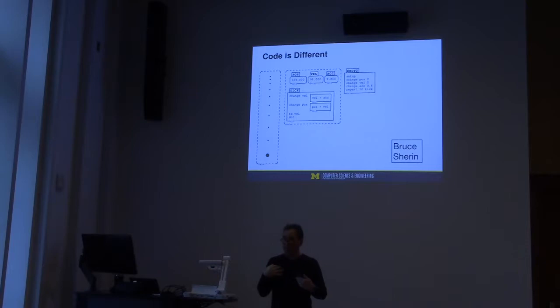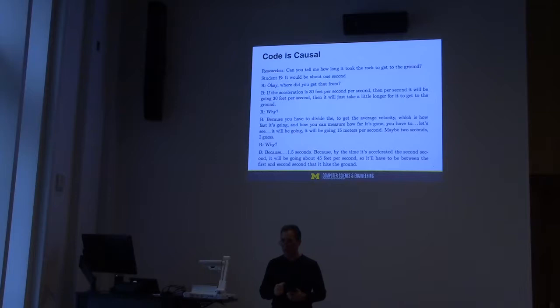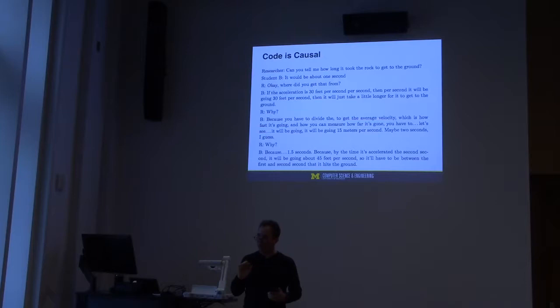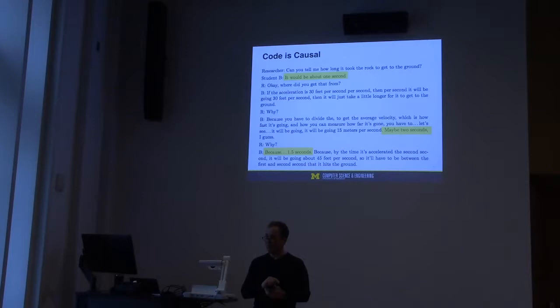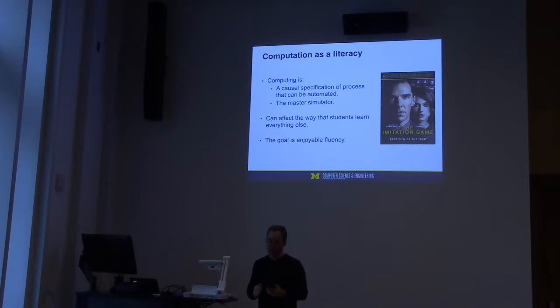I did something similar for my dissertation work here at Michigan. When I asked a student afterwards: you're at the top of a two-story building and you drop a rock — how long does it take to hit the ground? There were no X's, V's, A's, or T's in his description. He wasn't solving the equation. He was running a simulation second by second in his mind — a causal model of how each second, acceleration and velocity and time relate. He came up with an estimate: one and a half seconds. The powerful idea is that computation is a causal specification of process that can be automated.